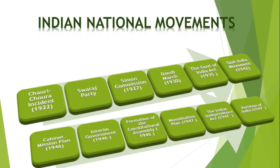Next is the Interim Government, 1946. On September 2, 1946, an Interim Government was formed. Congress members led by Pandit Jawaharlal Nehru joined it, but the Muslim League didn't accept it and withdrew its earlier acceptance of the Cabinet Mission Plan.